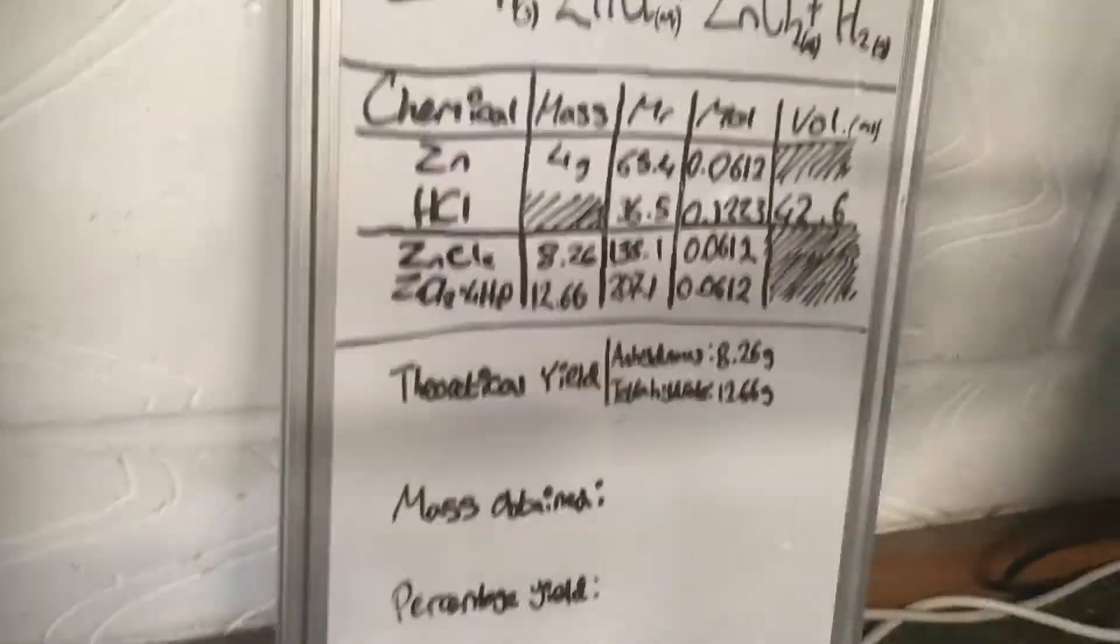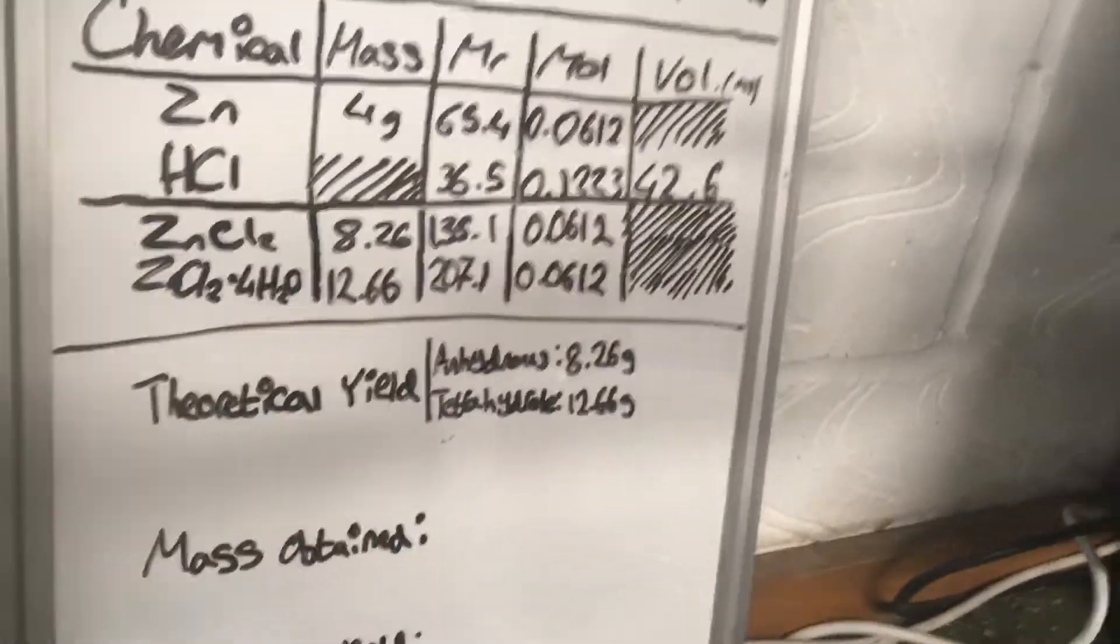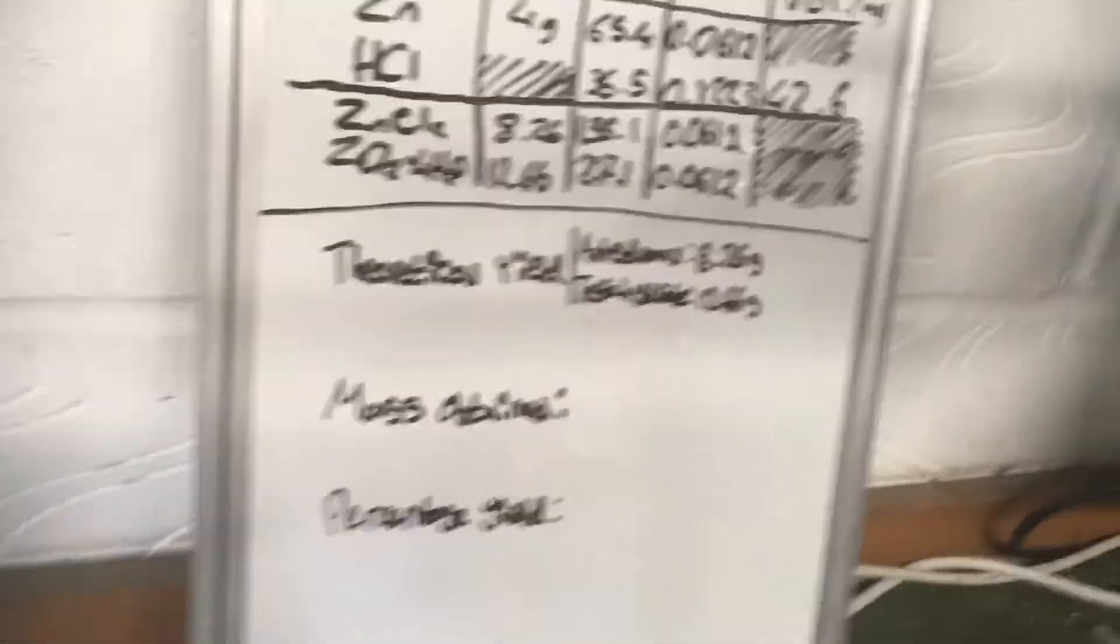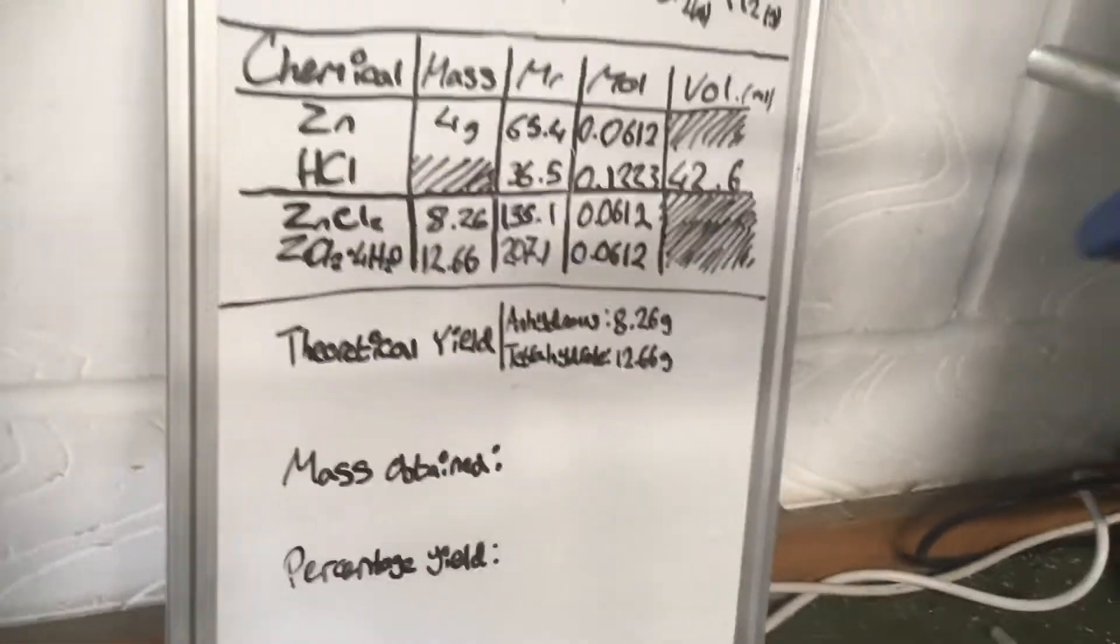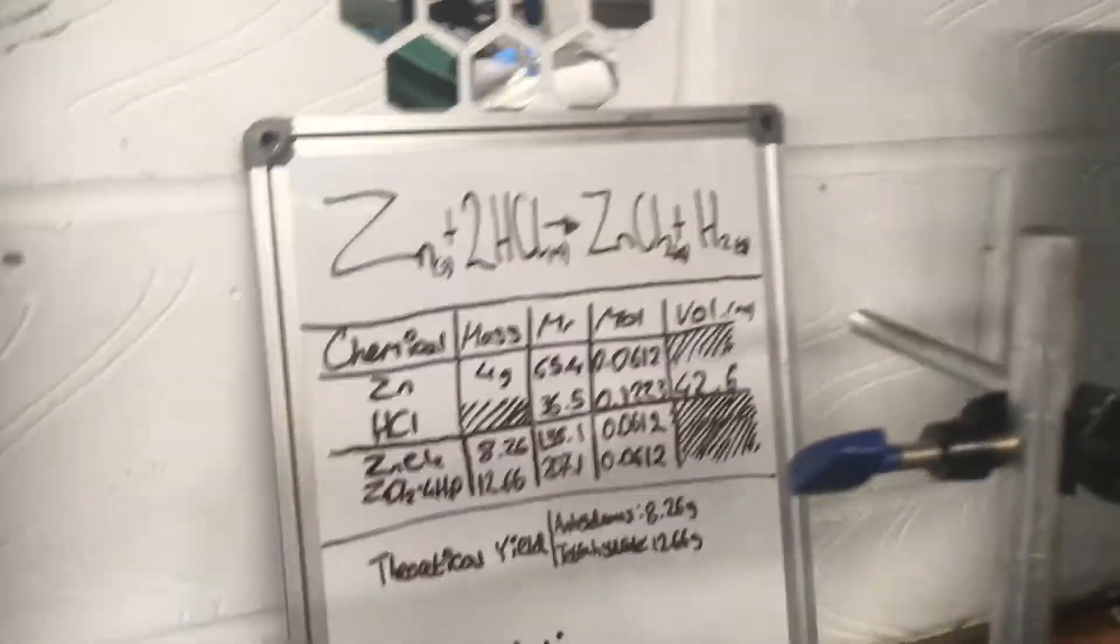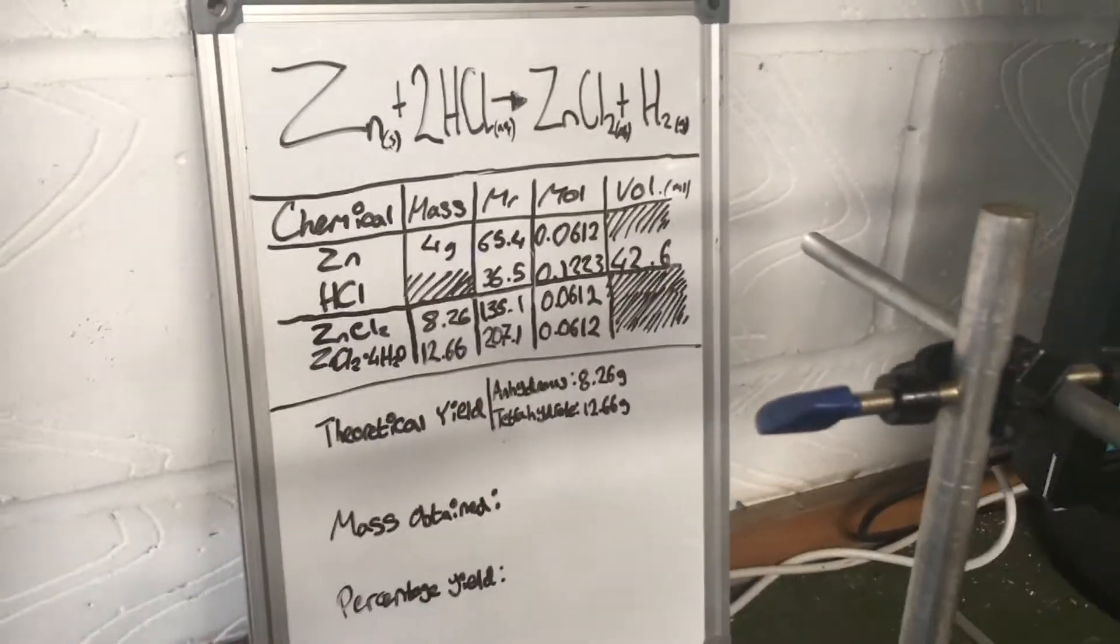I've also done some recalculating because I didn't factor in that what I would get is the tetrahydrated form, so with 4 water molecules surrounding it. So I should get 12.66 grams, which is better. But again, I don't actually need this unless I'm doing some chlorination reactions for alcohol testing or something, which I might do eventually, but I don't have any current plans for it.